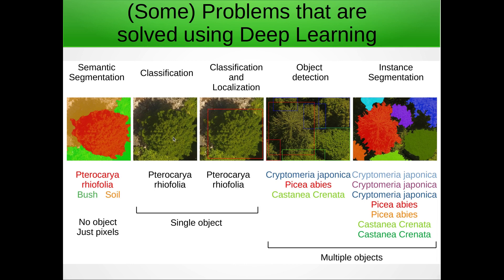In classification we assign different labels to each image, and for example, this is used to recognize faces. When we see in some movie a very advanced face recognition software that's able to find someone in a crowd, that software is probably first using object detection — it's detecting the faces in the crowd.